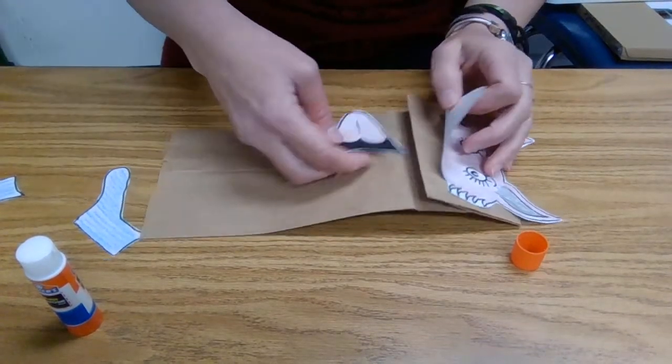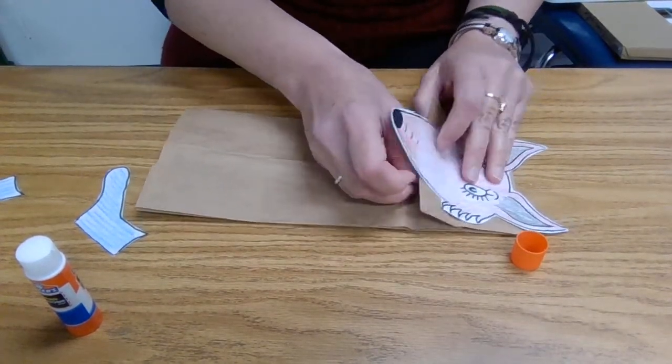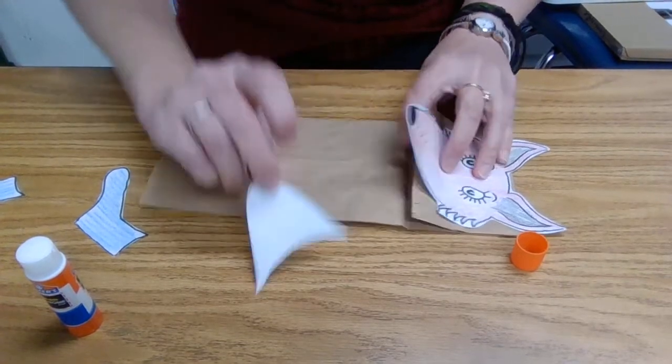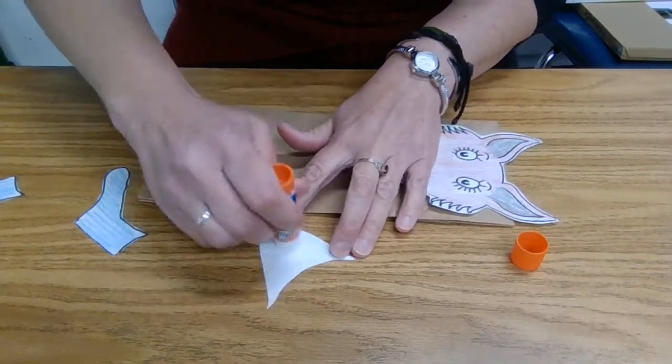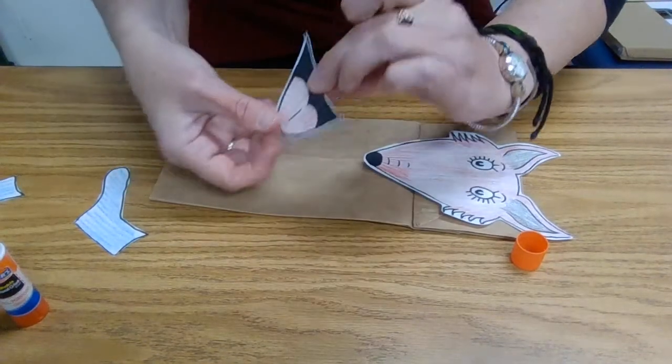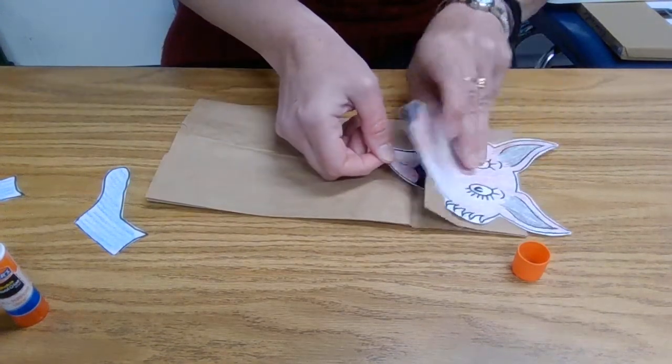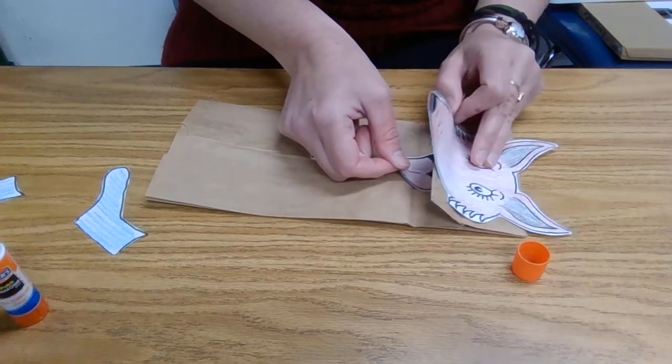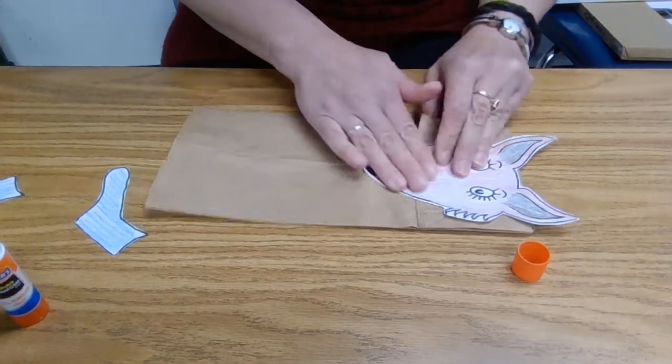Your mouth is going to go on the underside, underneath his nose, so we'll put glue on the mouth. And we'll try to get it to go under his nose a little bit, but underneath the flap also. Just like that.